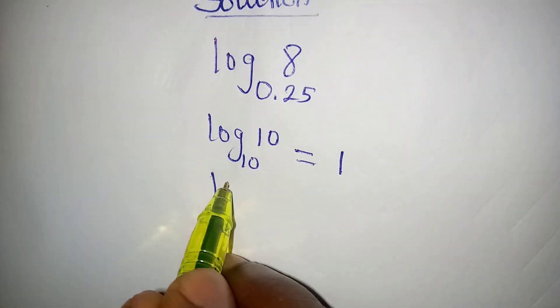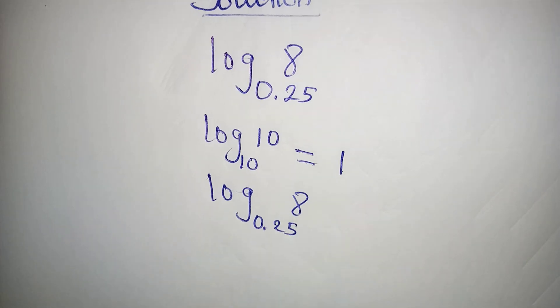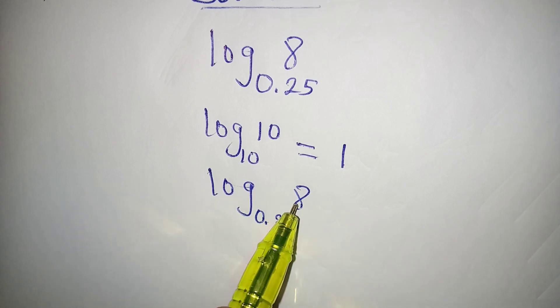It means that if you have this log 8 to base 0.25, it means what would you raise 0.25 to to get 8. That is the value of this log 8 to the base of 0.25.